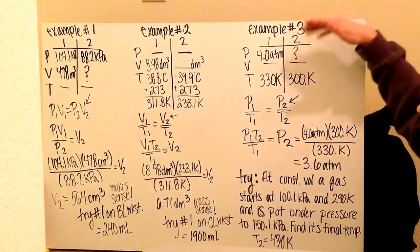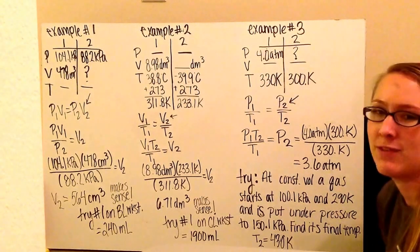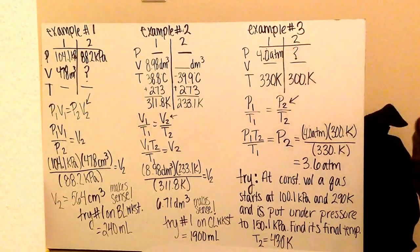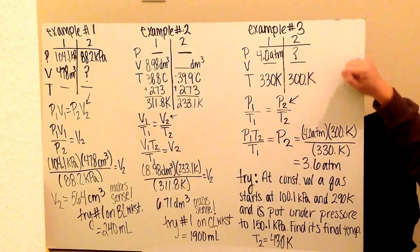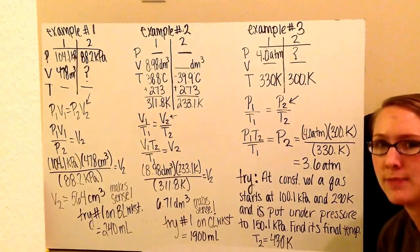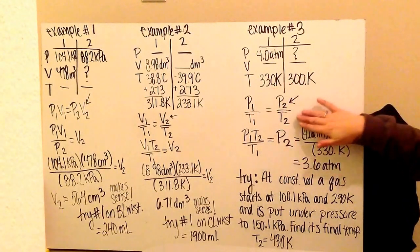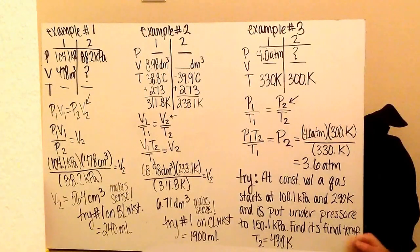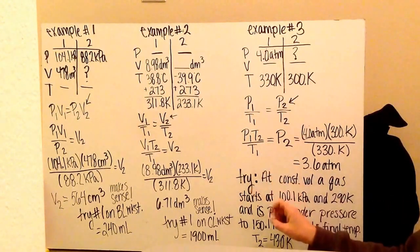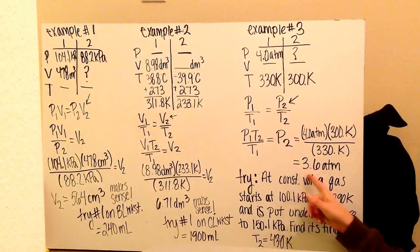Example number three tells me that I have a constant volume. I make my T-chart and put dashes in for both volumes, which tells me I have a Gay-Lussac's Law problem. My initial pressure is 4.0 atmospheres, I'm looking for my final pressure. I'm told I have 330 Kelvin, and that decreases to 300 Kelvin. Luckily, I'm starting with Kelvin so I don't need to convert. My equation is P1 over T1 equals P2 over T2, solving for final pressure.